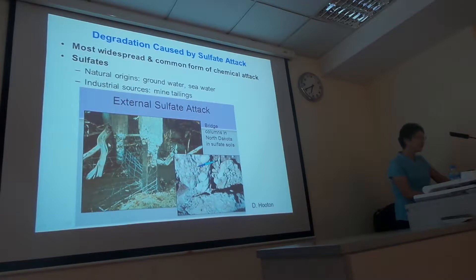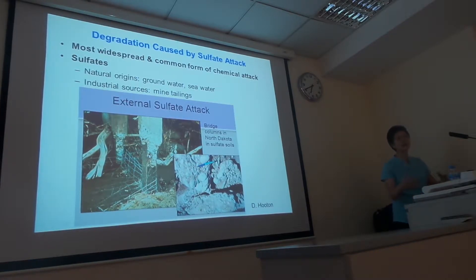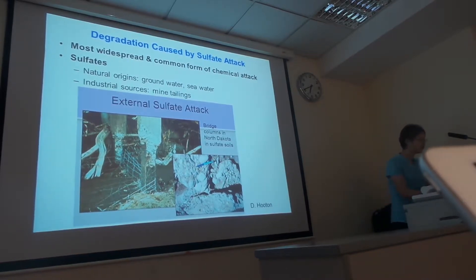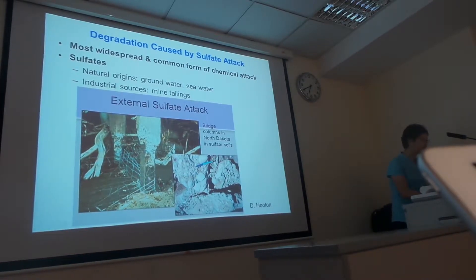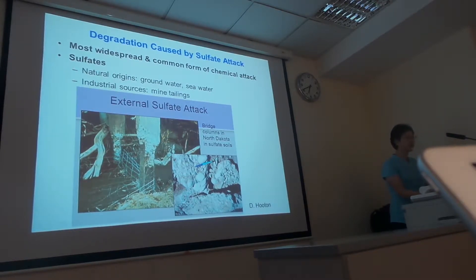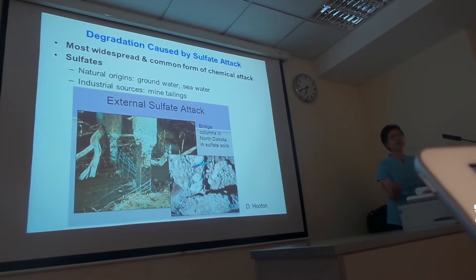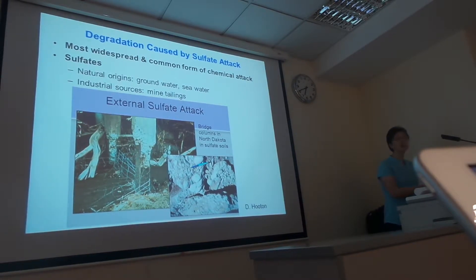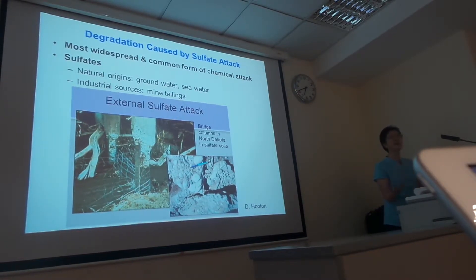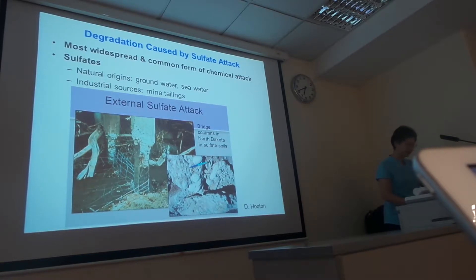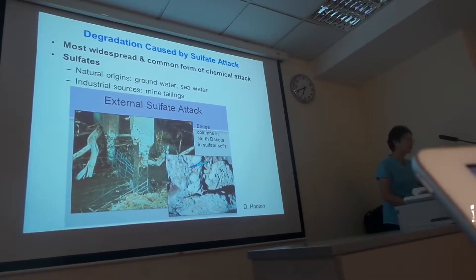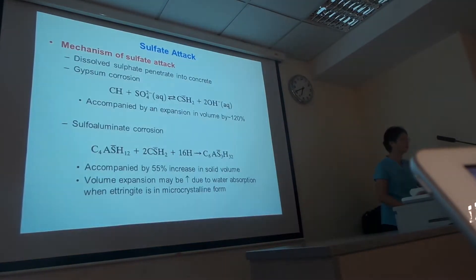Here is one example. You can see that with time, a large part of the concrete exposed to high sulfate is basically gone. What you see left are some of the steel bars. You can see that the surface cement paste is gone, and whatever is left is exposed aggregate. This is somewhat typical for classical sulfate attack.